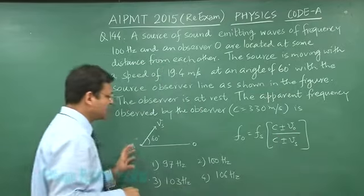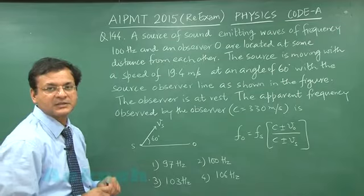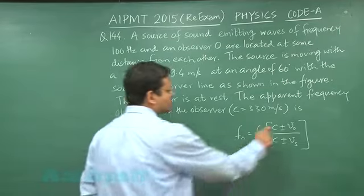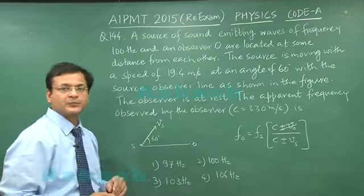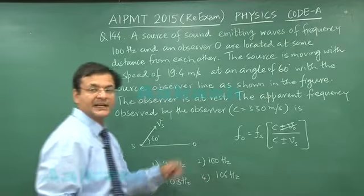Now in this particular situation, you see the observer is at rest. So this thing will be gone. And this source is coming towards the observer, so the velocity will be taken here in negative.